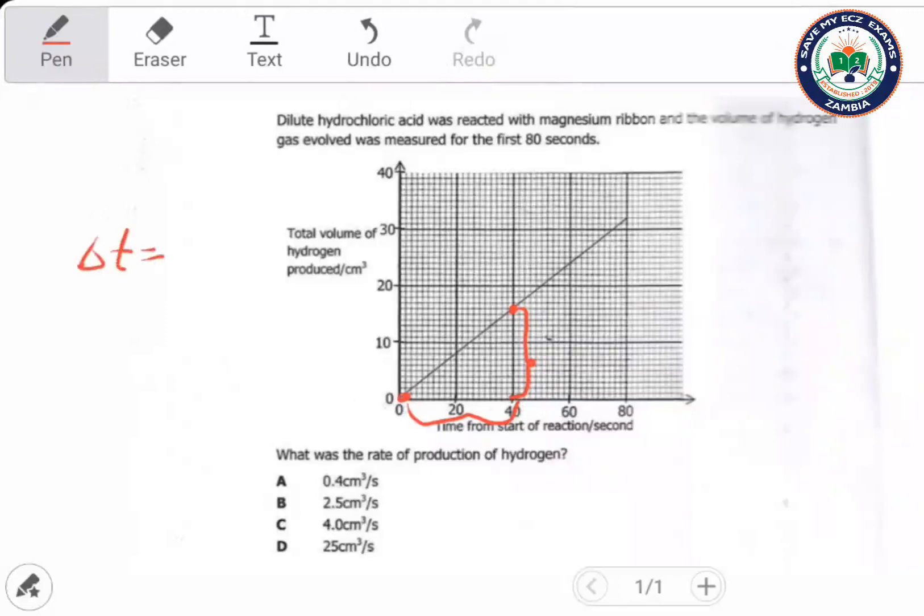From zero - remember we are finding gradient, right? So from there to there. Now from here, look at here, this is 10, right? So 10, that should be 10...